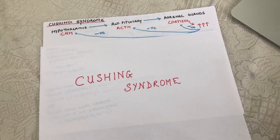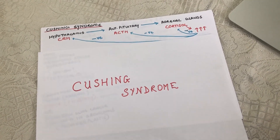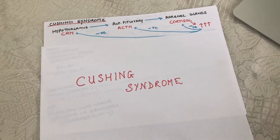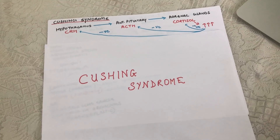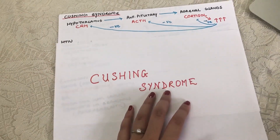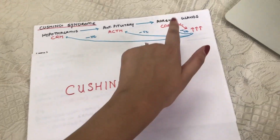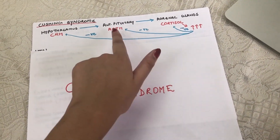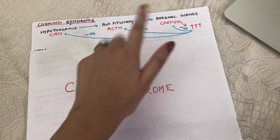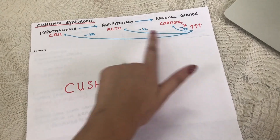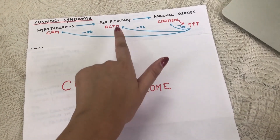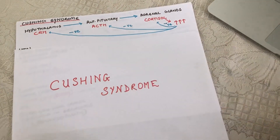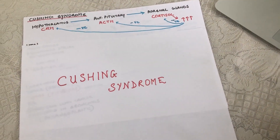Cortisol has a variety of functions — it increases your glucose levels when needed and has a permissive action between norepinephrine and alpha-1 receptors, raising your blood pressure. But you don't want too much of it, and that's when the negative feedback comes in. When the body senses excess cortisol, it inhibits ACTH and CRH, reducing cortisol secretion from the adrenals.